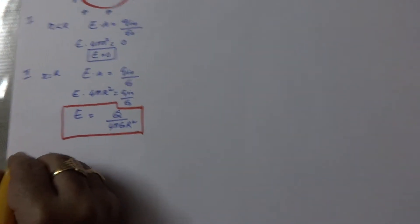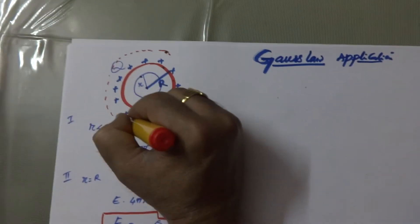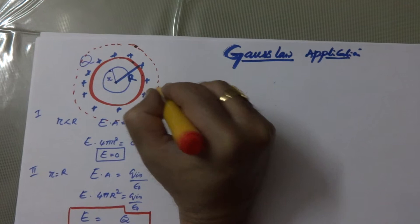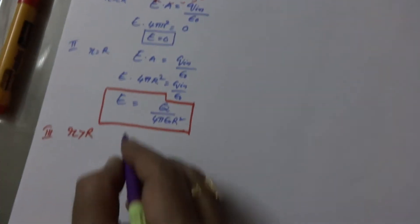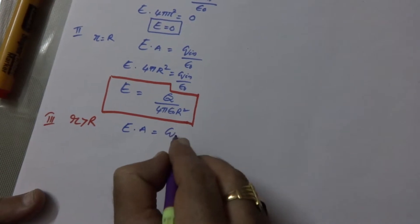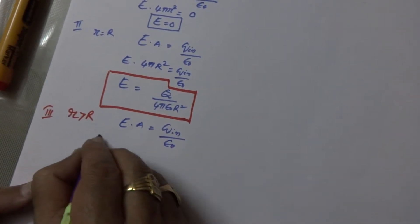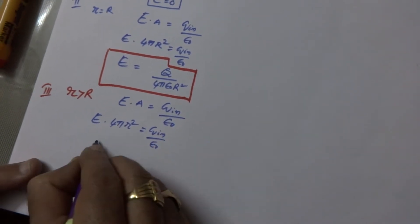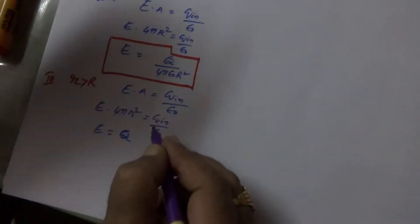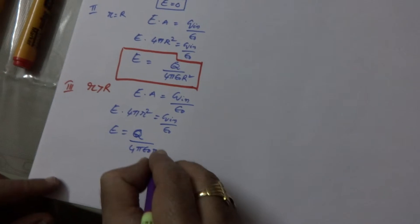Now the third case: when r is greater than R, you have to imagine the Gaussian surface — shown with dotted lines — outside the sphere at radius r. Again, we apply Gauss Law: E·A is equal to Q_in by ε₀. Therefore E into 4πr² equals Q_in by ε₀. Q_in within this Gaussian surface is still only Q. So E equals Q by 4πε₀r².